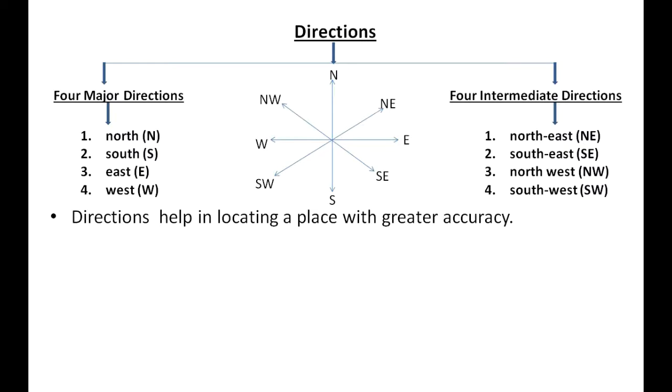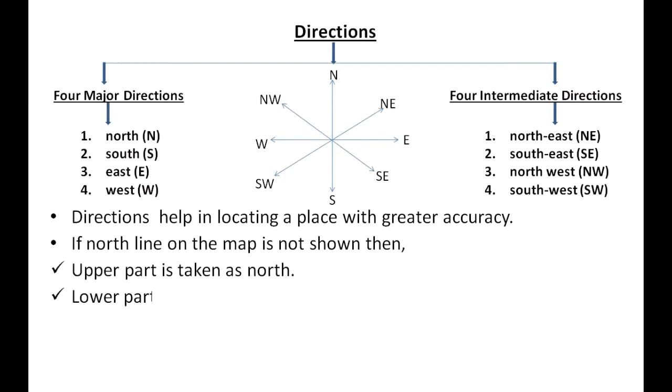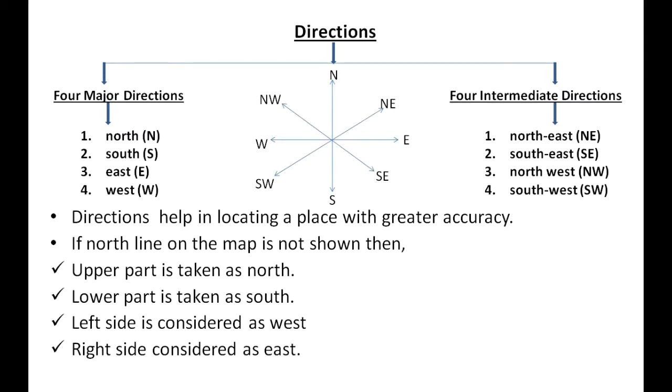If the north line on the map is not shown, then the upper part is taken as north, lower part is taken as south, left side is considered as west, and right side is considered as east.